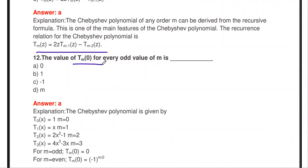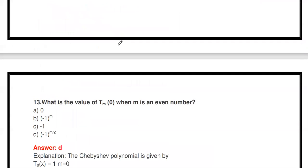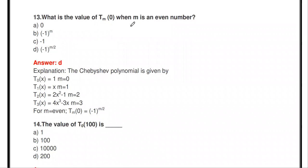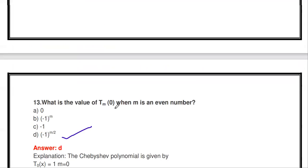The value of Tₘ(0) for every odd value of m — that is m = 1, 3, 5, etc. — is always 0. For even values of m, Tₘ(0) = (−1)^(m/2). The next question: what is the value of Tₘ(0) when m is even? The answer is (−1)^(m/2). These are standard values to remember.